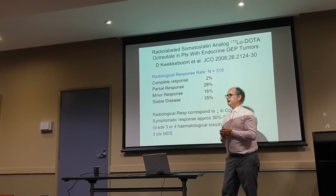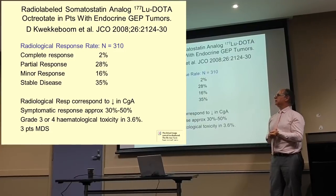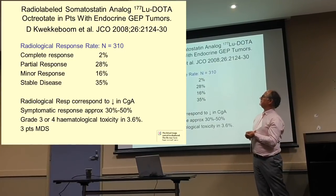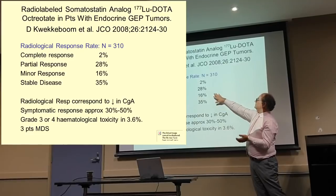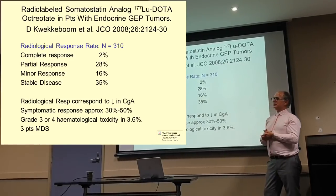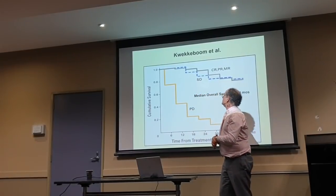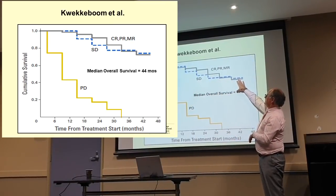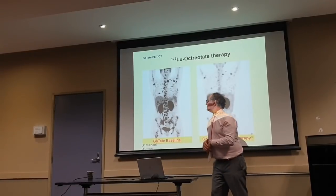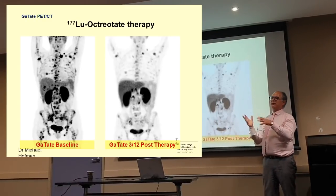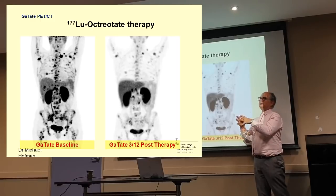Peter Mac is probably the second or third largest PRRT provider in the world, and has been doing that for about 20 years now. The largest series came out of the Netherlands — about 300 patients — showing that almost 70 to 80% of patients had some form of disease control or stabilisation. Those patients that responded had better survival compared to those who didn't. That Dutch paper includes a whole variety of patients in terms of different types of disease and extensive prior therapy, so it's not a uniform population.